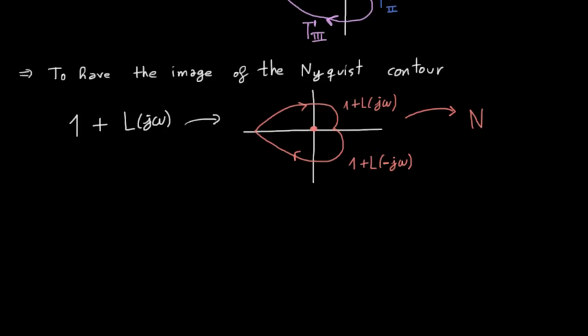The finishing touch on the criterion comes by realizing that if 1 plus L of j omega encircles the origin, then L of j omega encircles the point minus 1. Therefore, we can work directly with the open loop frequency response, counting its encirclements of the point minus 1, which from now on will be called critical point.